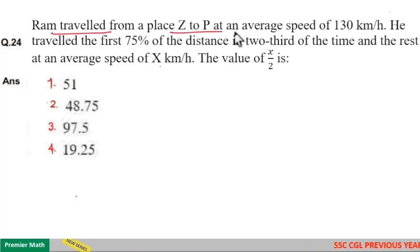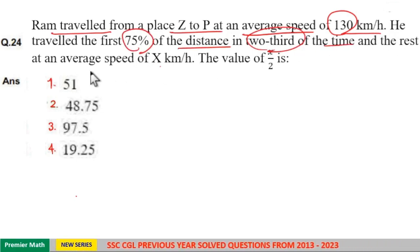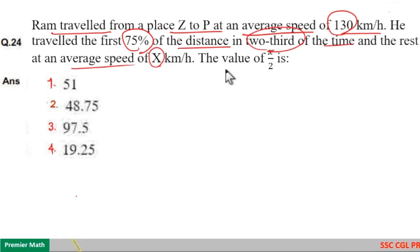Ram travelled from place Z to P at an average speed of 130 km per hour. He travelled the first 75% of the distance in two-third of the time and the rest at an average speed of x km per hour. The value of x by 2 is.